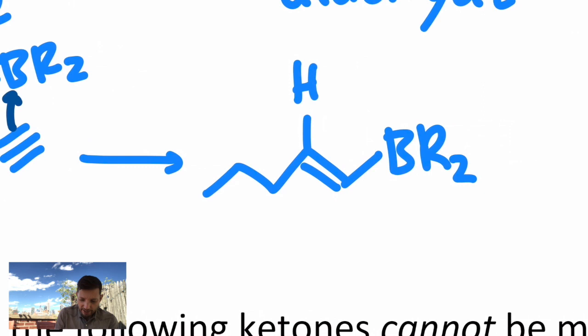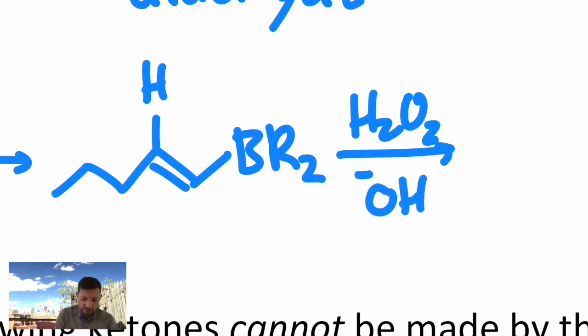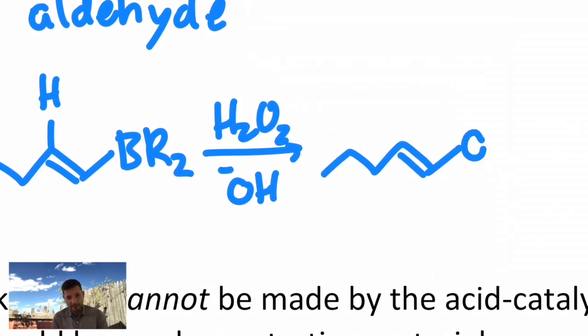And just like we saw for the alkene reaction, when you treat this with peroxide and base, I'm not going to draw the arrows for this. It does the same thing. It converts the carbon boron bond into a carbon oxygen bond. So we turn our carbon boron bond into an enol. So we have another enol and this will also tautomerize to make a carbonyl.